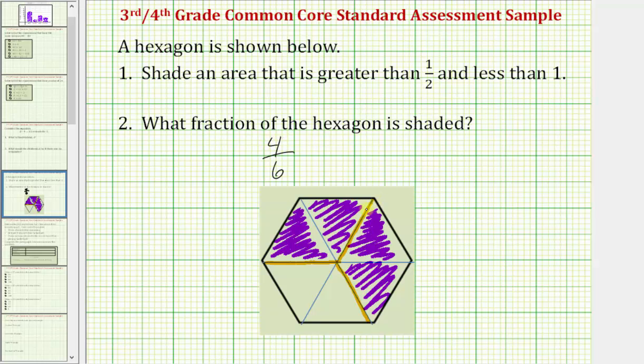But also notice how, if we take a look at how the hexagon is cut or partitioned using these orange segments, notice how four-sixths is also equal to two-thirds. So we could also express this fraction as two-thirds. This is also not the only model that we can create to model a fraction that is greater than one-half and less than one.